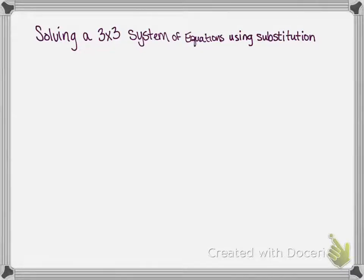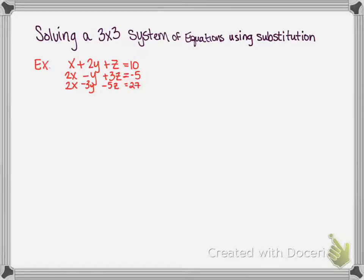Solving a three-by-three system of equations using substitution. We are going to look at the following system of equations in three variables: x plus 2y plus z equals 10; 2x minus y plus 3z equals negative 5; and 2x minus 3y minus 5z equals 27. We have three variables — x, y, and z — and we must have three equations in order to solve the system.